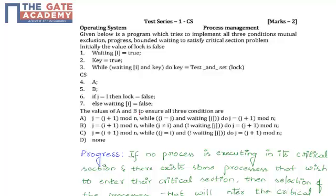The value of a and b to ensure all three conditions are: Option A — j = j + 1 mod n, while i equals j and waiting[j], do j = j + 1 mod n. Option B — j = i + 1 mod n, while j not equal to i and not waiting[j], do j = j + 1 mod n.